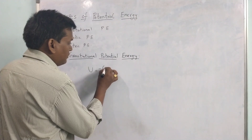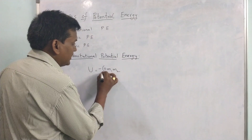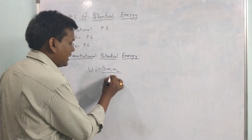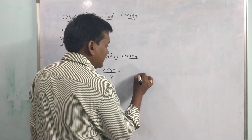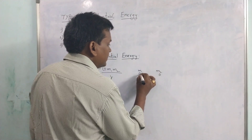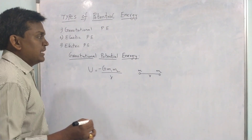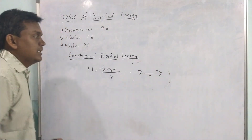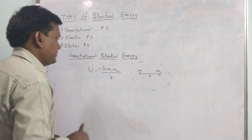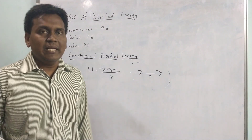then the gravitational potential energy is given as U equal to minus G, M1, M2 divided by R, where M1 and M2 are two mass particles separated by a distance R. So this is the mass particle M1 and this is the mass particle M2, separated by distance R. The gravitational potential energy is minus G M1 M2 by R.